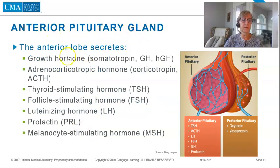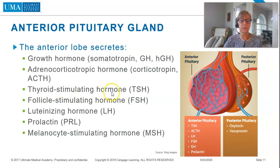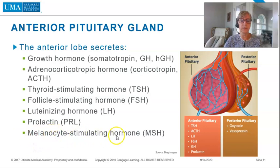The anterior pituitary lobe secretes growth hormone (somatotropin, GH, HGH), adrenocorticotropic hormone (corticotropin, ACTH), thyroid stimulating hormone (TSH), follicle stimulating hormone (FSH), luteinizing hormone (LH), prolactin (PRL), and melanocyte stimulating hormone (MSH).